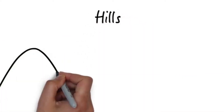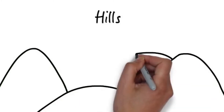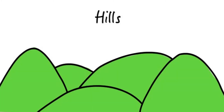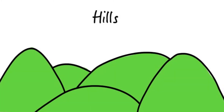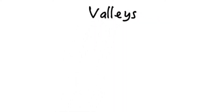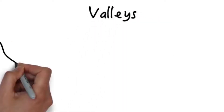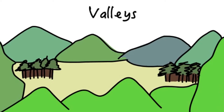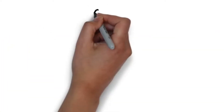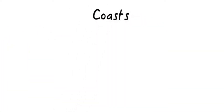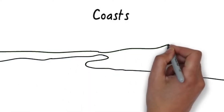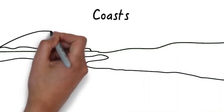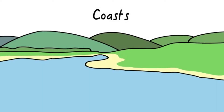Hills are relatively tall landforms that are smaller than mountains and have rounded tops. Valleys are low landforms found between mountains. They can be either wide or thin. Coasts are flat landforms with sandy beaches that separate land from water.